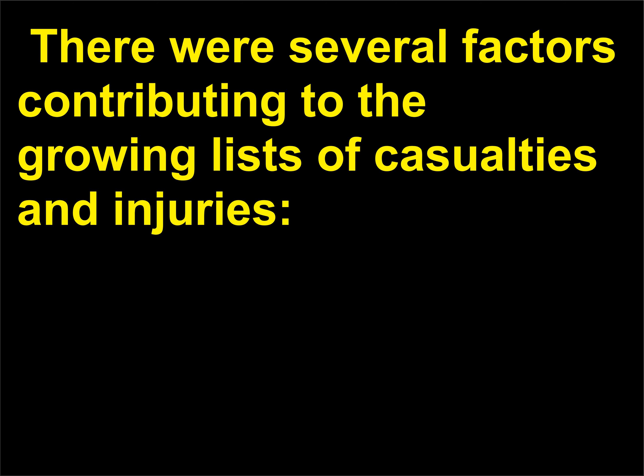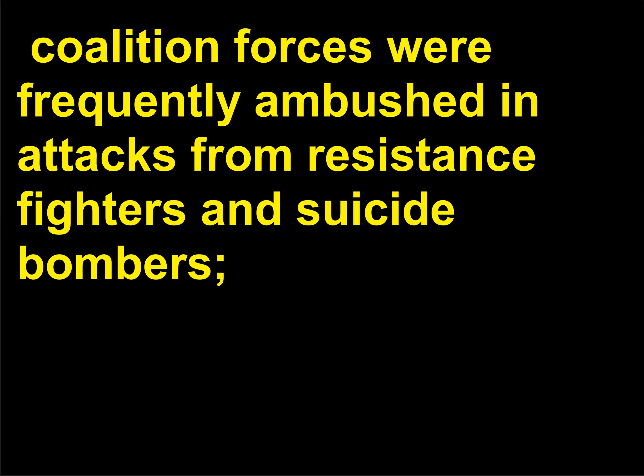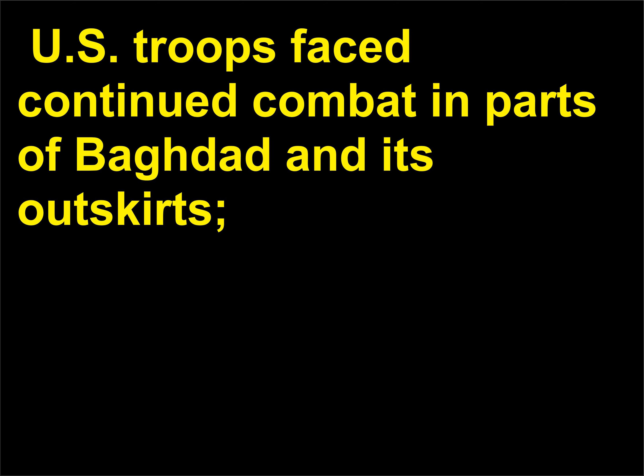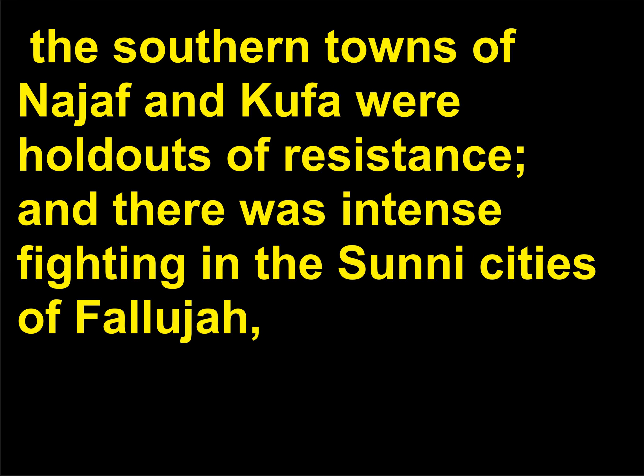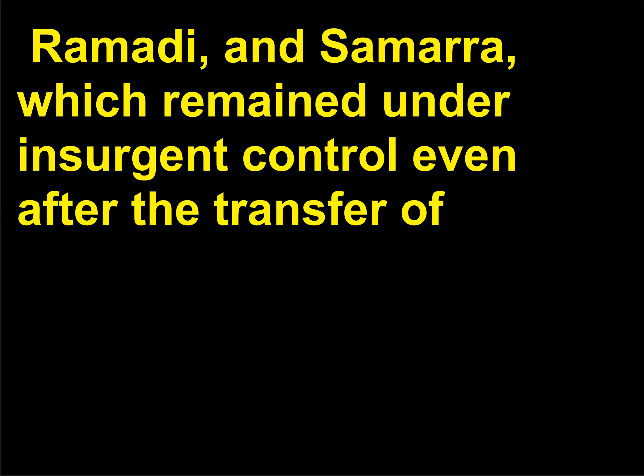There were several factors contributing to the growing lists of casualties and injuries. Coalition forces were frequently ambushed in attacks from resistance fighters and suicide bombers. US troops faced continued combat in parts of Baghdad and its outskirts. The southern towns of Najaf and Kufa were holdouts of resistance, and there was intense fighting in the Sunni cities of Fallujah and Ramadi, which remained under insurgent control even after the transfer of political authority from the United States to the interim Iraqi authority on June 28, 2004.